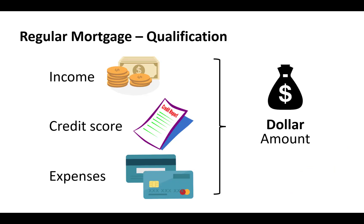What I want to talk about is why you can't get a pre-approval, and this is how you qualify for a regular mortgage. First they look at your income, they'll look at your credit score, and then they'll look at your expenses. Based on all of those, they'll run some calculations and give you a dollar amount for the mortgage you can get. This is how a pre-approval works with a traditional mortgage — you get given a dollar amount based on your income, credit score, and expenses.